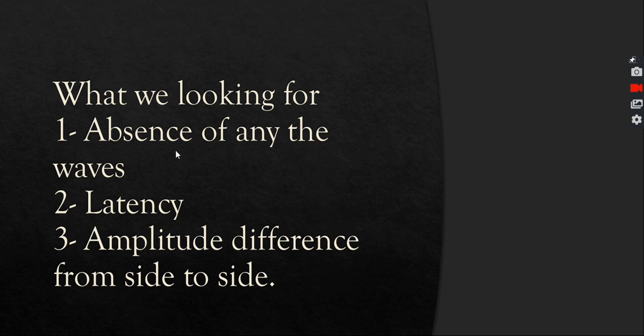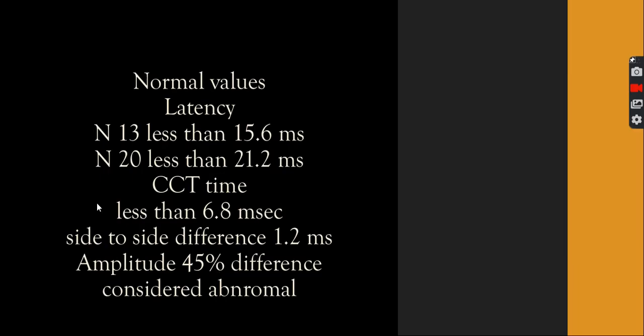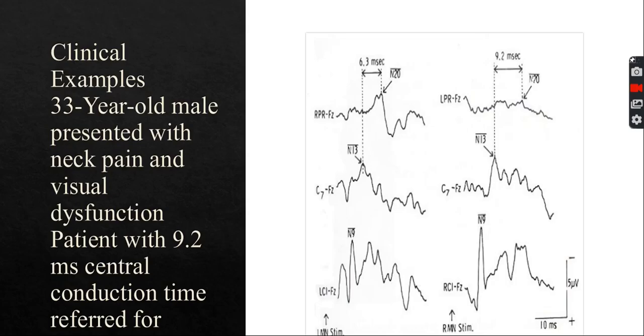What are we looking for? We're looking for the absence of any wave. We're looking for a latency problem or an amplitude difference from side to side. These are the normal values: the N13 should come no later than 15.6 milliseconds, the N20 should come no later than 21.2 milliseconds. The central conduction time should never be more than 6.8 milliseconds between the N13 and N20 or N20 to P25. Side to side difference should be not more than 1.2 milliseconds and amplitude difference should not be more than 45 percent.